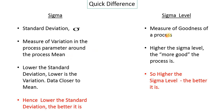Sigma level, on the other hand, is a measure of the goodness of a process — it is an indicator of how good my process is. As we have seen in previous videos, unwanted variation is the focus area of Six Sigma, and that is what we want to reduce.